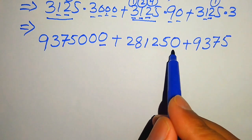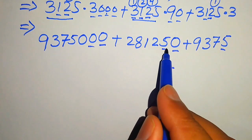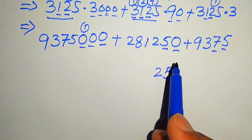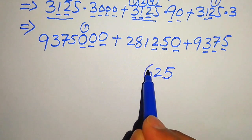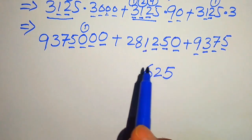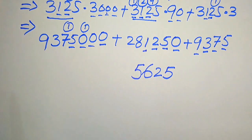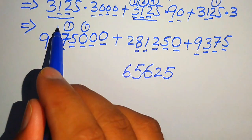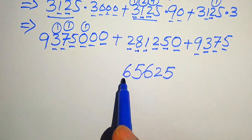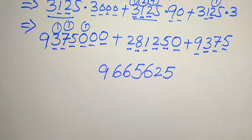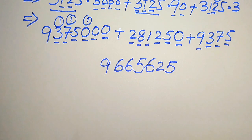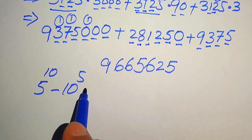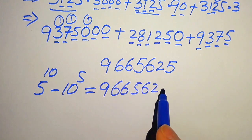In the final step we sum all three products: 9,375,000 plus 281,250 plus 9,375. Adding column by column gives the final answer: 9,665,625. So the simplified form of 5 to the power of 10 minus 10 to the power of 5 equals 9,665,625.